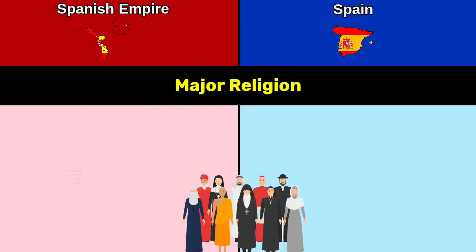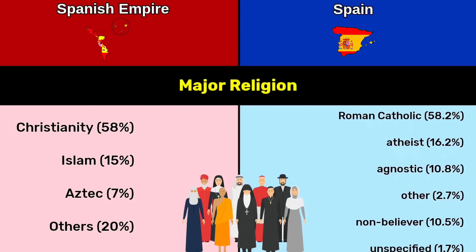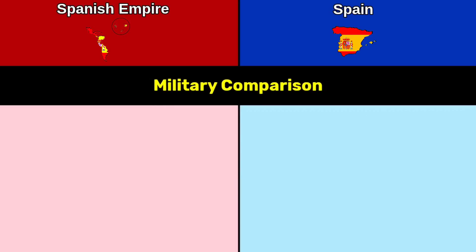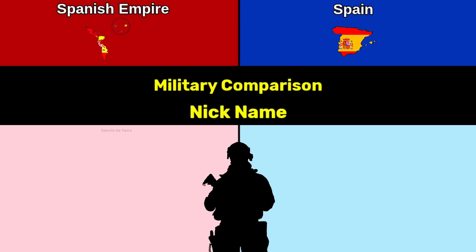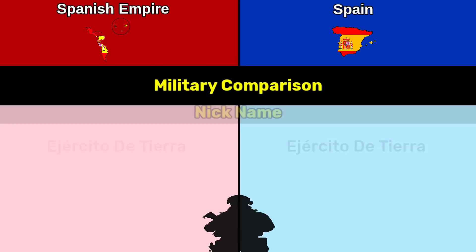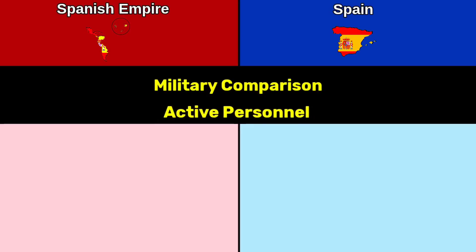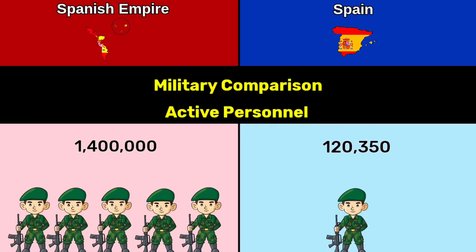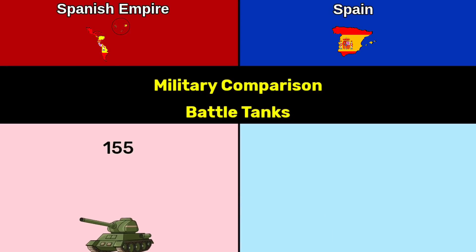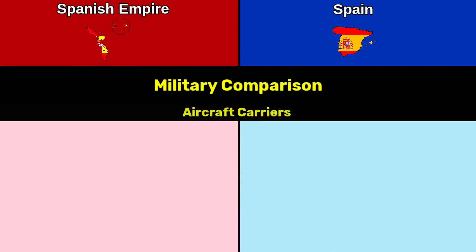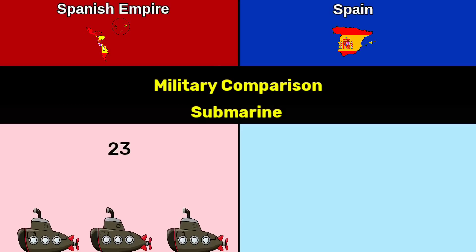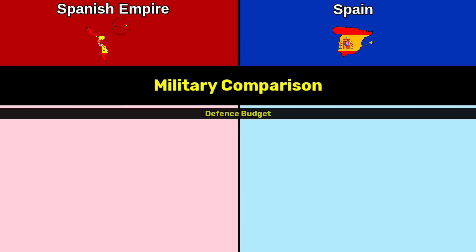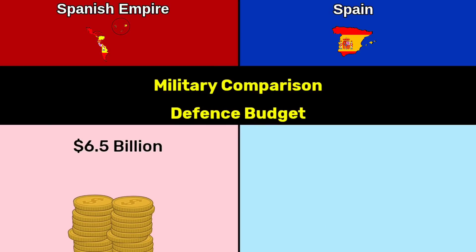Official language: Spanish for both. Major religion: Christianity, dominant in both. Military comparison — nickname: Ejército de Tierra for both sides. Active personnel: Spanish Empire 1.4 million; Spain 120,350. Battle tanks: 155 vs 552. Aircraft carriers: 0 vs 1. Submarines: 23 vs 2. Defense budget: 6.5 billion dollars vs 17.2 billion dollars.